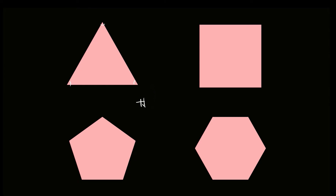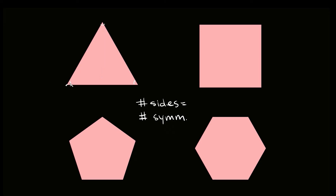What's nice about regular polygons is that the number of sides is equal to the number of lines of symmetry. So for example on this triangle, it has three sides, so there are three lines of symmetry: this is one, this is two, and this is three.